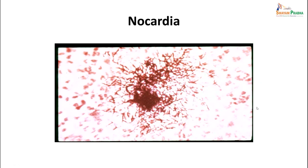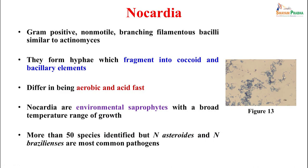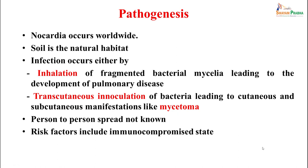Nocardia are again gram-positive branching filaments — non-motile, branching filamentous bacilli. They form hyphae which fragment into coccoid or bacillary elements. They differ in that they are aerobic and acid-fast. Nocardia are also environmental saprophytes, growing in a broad range of temperatures in the environment. More than 50 species are known, but Nocardia asteroides and braziliensis are the most common pathogens. Nocardiosis occurs worldwide; soil is the natural habitat. Infection is usually caused by inhalation of fragmented bacterial mycelia, and transcutaneous inoculation can occur, leading to cutaneous and subcutaneous mycetoma. Person-to-person spread is not seen, and risk factors are usually immunocompromised hosts.